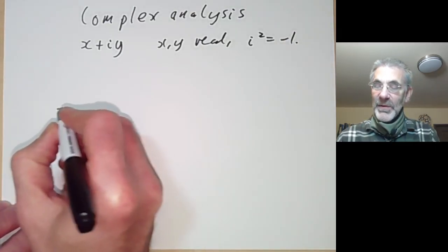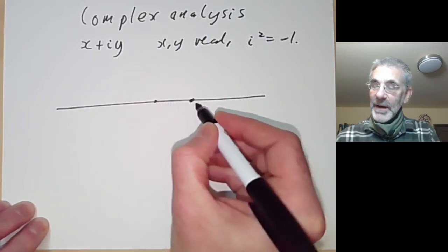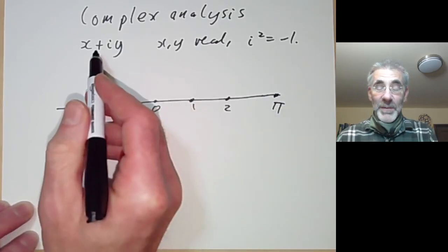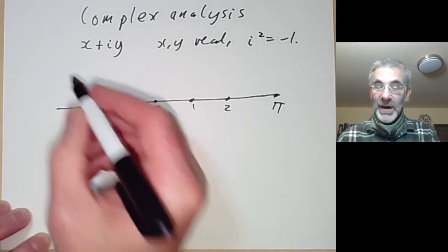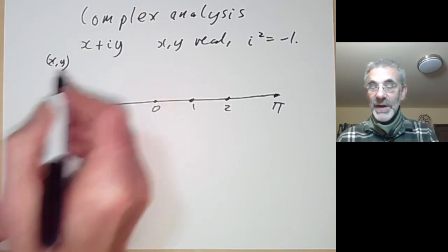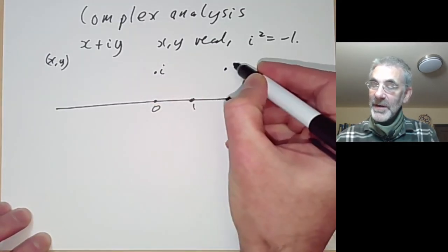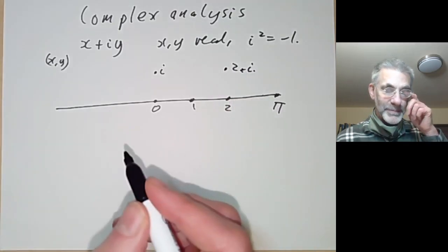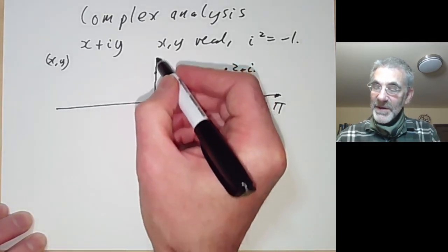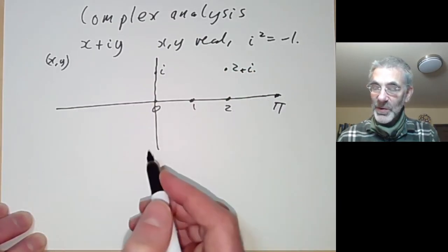Just as we represent real numbers by placing them on a real line — with 0, 1, 2, and pi somewhere along it — we represent complex numbers as elements of a plane. The complex number x plus iy is represented as the point (x, y) in the plane. So for example, the number i would be up here, and 2 plus i would be here. Numbers that are multiples of i are called the imaginary axis, and real multiples of 1 form the real axis.